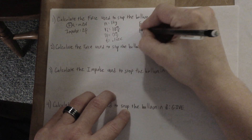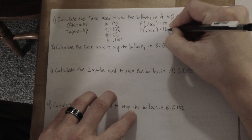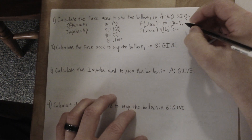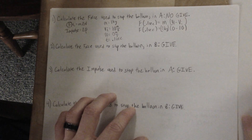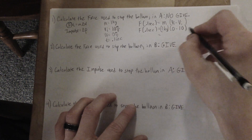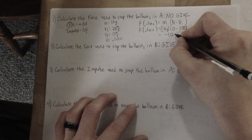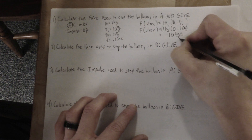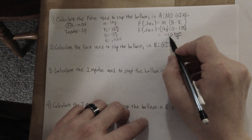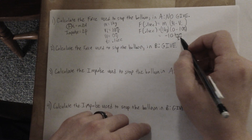So we write F times 0.1 seconds equals mass times VF minus VI. Mass is one kilogram, VF is 0, and VI is 10. The right side works out to negative 10, so the change in momentum is negative 10 kilogram meters per second. That's the momentum the partner's hand takes away from the balloon when they catch it.